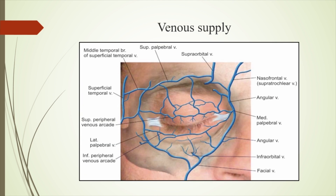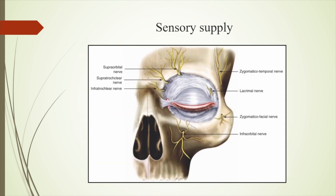In the venous supply, it is mainly drained by the facial vein, which comes medially as the angular vein. The motor supply is by the facial and oculomotor nerves, and the sensory supply is from the ophthalmic and maxillary divisions of the trigeminal nerve, along with sympathetic nerve supply from the superior cervical ganglion.